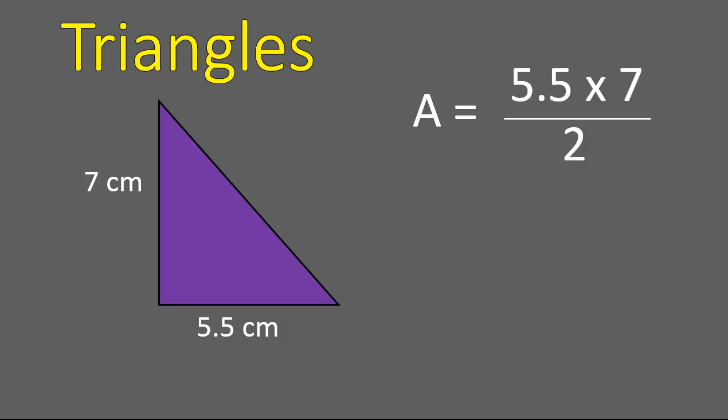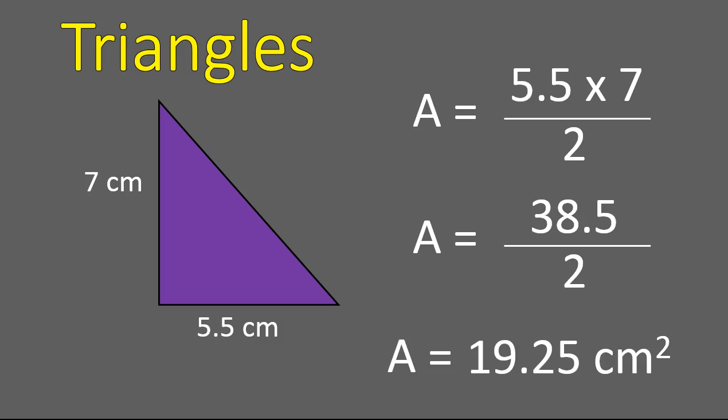Here is the equation set up. The base is 5.5, the height is 7. We multiply those two. That will give us 38.5. And then you say 38.5 divided by two. And your final answer is that the area of this triangle is 19.25 square centimeters. That's it. The base times the height of the triangle, and then you divide it by two.